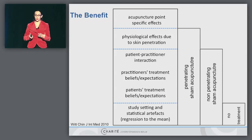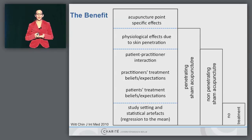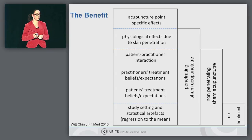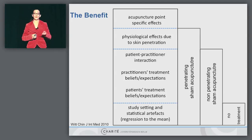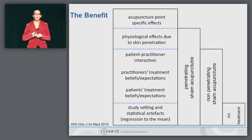When we use control groups, it depends on the control we use for what we control. When I use a penetrating sham acupuncture, I have in my control everything besides the acupuncture point-specific effect, so I'm focusing on the acupuncture point-specific effect only. When I use a non-penetrating sham, I have both the acupuncture point-specific effect and the physiological effects due to skin penetration. And if I have a no-treatment control, I include also all non-specific effects in my results.